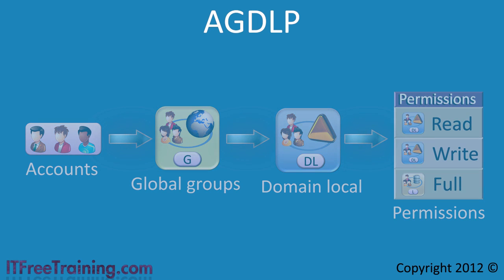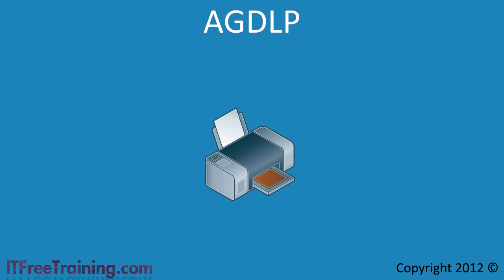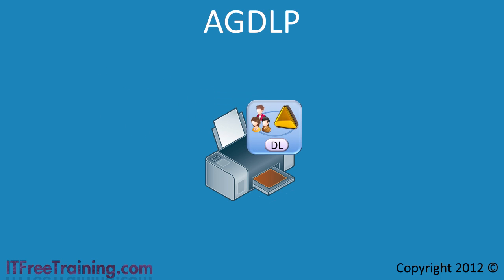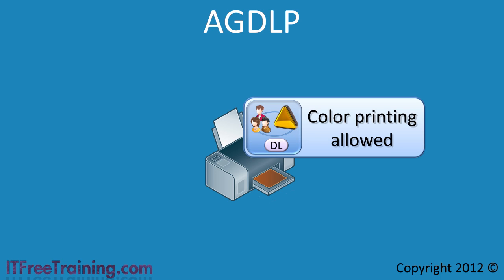First you have a resource — in this case let's say a color printer. You want to control who can use the color printer since color printing is expensive and you want to limit its use. Following this group strategy, you could create a domain local group and apply it to the printer. I will call the group 'color printing allowed'.